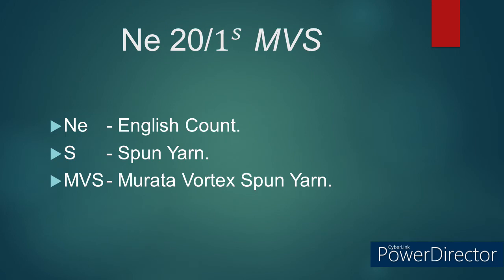Number 6: NE 20/1S MVS. This terminology is common in biotech packs too. Here NE refers to English count. S refers to spun yarn. MVS refers to Murata Vortex Spun, meaning the yarn was manufactured using airjet spinning or vortex spinning technique. Murata is the name of the machine manufacturer.